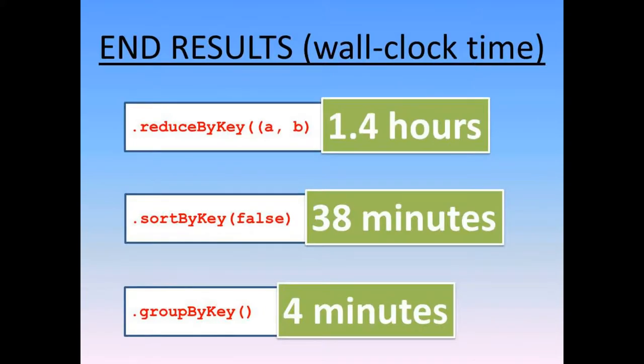When running against all of the data from 2016, here were my results. The first reduce-by-key step took 1.4 hours. The sort for popularity took 38 minutes, and the final concatenation and JSON formatting took 4 minutes.